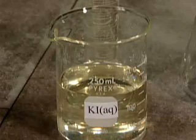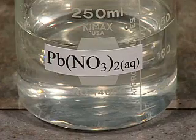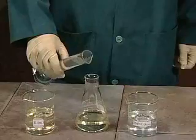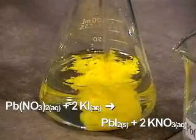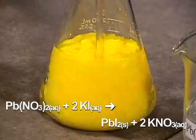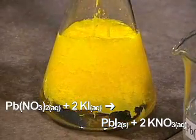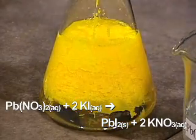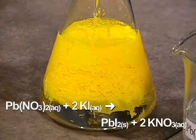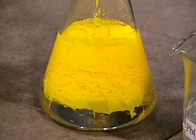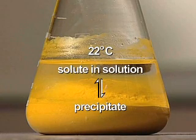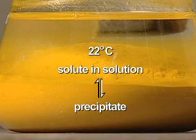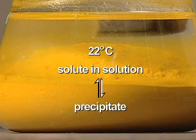Potassium iodide and lead-2-nitrate solutions are mixed in an Erlenmeyer flask. A yellow solid precipitates out of solution. The lead-2-iodide precipitate has low solubility in water at room temperature. With time, the precipitate settles. A dynamic equilibrium is established between the dissolved solute and the precipitate.